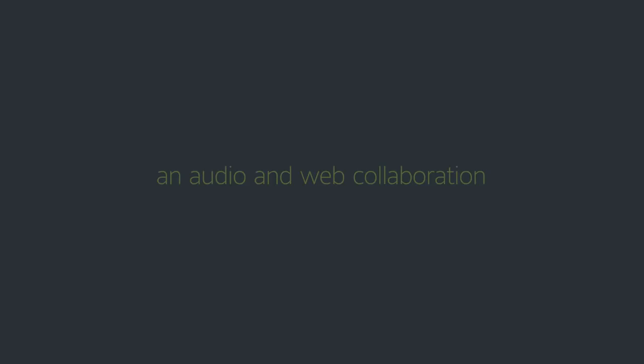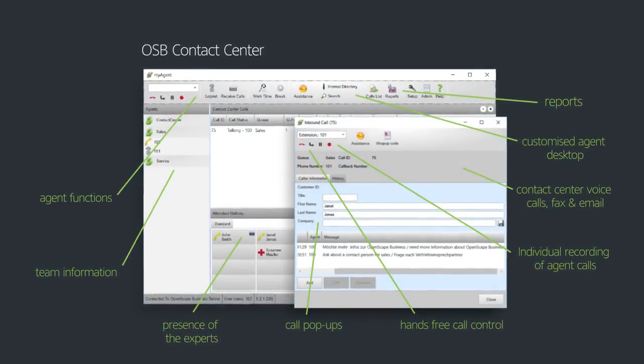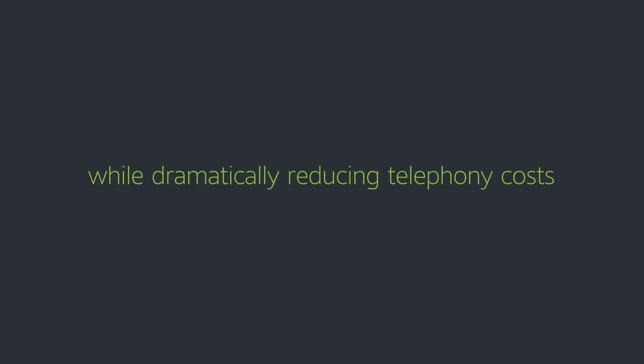OpenScape Business is the right choice for small to mid-sized organizations. It's a fully featured unified communication solution, an audio and web collaboration platform, a messaging and mobility tool, a multimedia contact center, and a robust platform for both traditional and IP voice communications. In fact, OpenScape Business is everything small enterprises, schools, universities, and local government agencies need to make their people more productive and their virtual teams more connected, while dramatically reducing telephony costs.